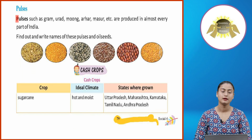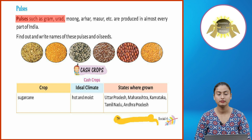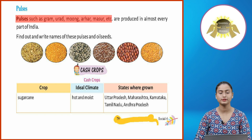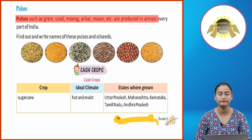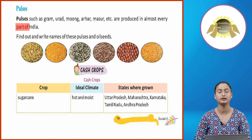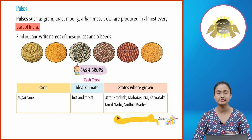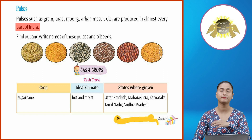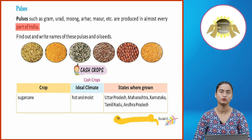Pulses such as Gram, Urad, Mung, Arhar, Masur, etc. are produced in almost every part of India. You will see these seeds growing across all states.